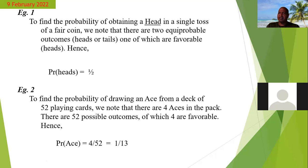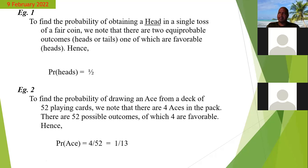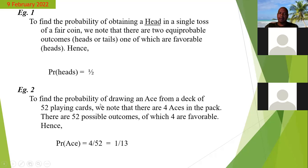Does luck have anything to do with probability? Luck is something totally different — luck is when something happens even when you have a lower chance. So if you only have one ticket and win the lottery, you're really lucky. For example two: to find the probability of drawing an ace from a deck of 52 playing cards, we know there are only four aces in the pack.